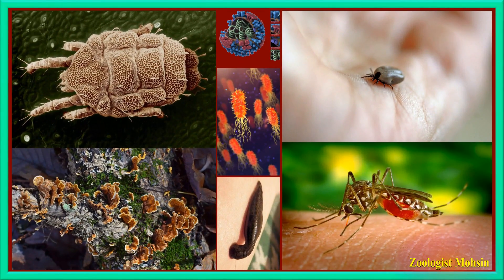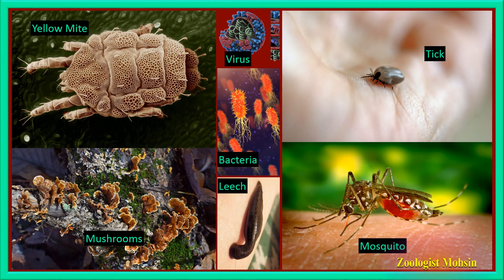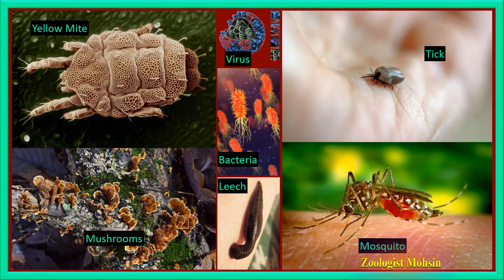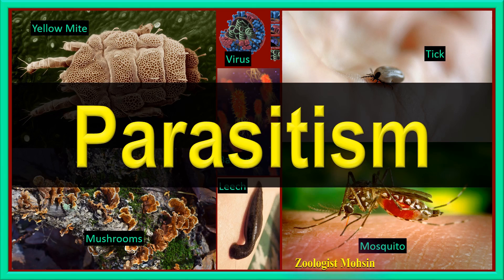These pictures on the screen look nice and good, but actually they are intruders and food thieves which live on other organisms and cause some diseases — whether it is yellow mite, virus, bacteria, leech, mosquito, or mushroom. These are some examples, and these organisms have a relationship with their host that is called parasitism.